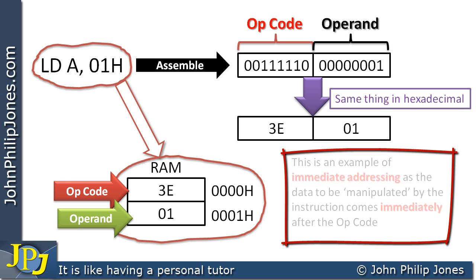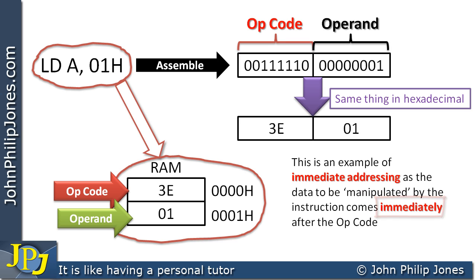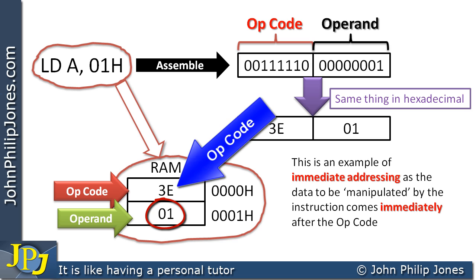This kind of instruction is an example of immediate addressing, as the data to be manipulated comes immediately after the opcode. In this case it means transferring the value 01 from RAM into register A inside the CPU. The name immediate addressing comes from the fact that the operand comes immediately after the opcode.